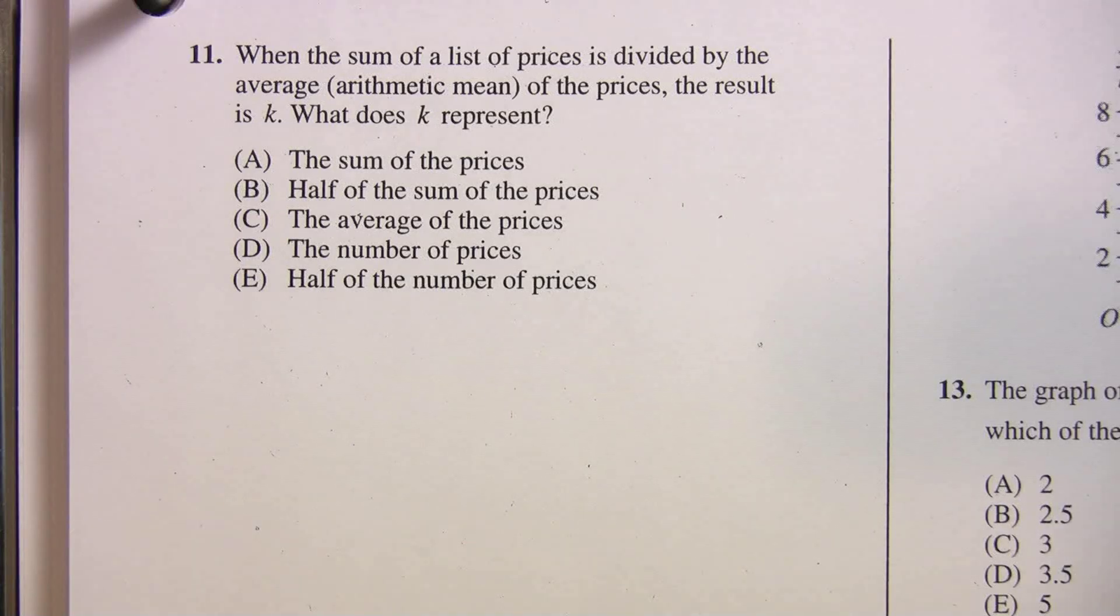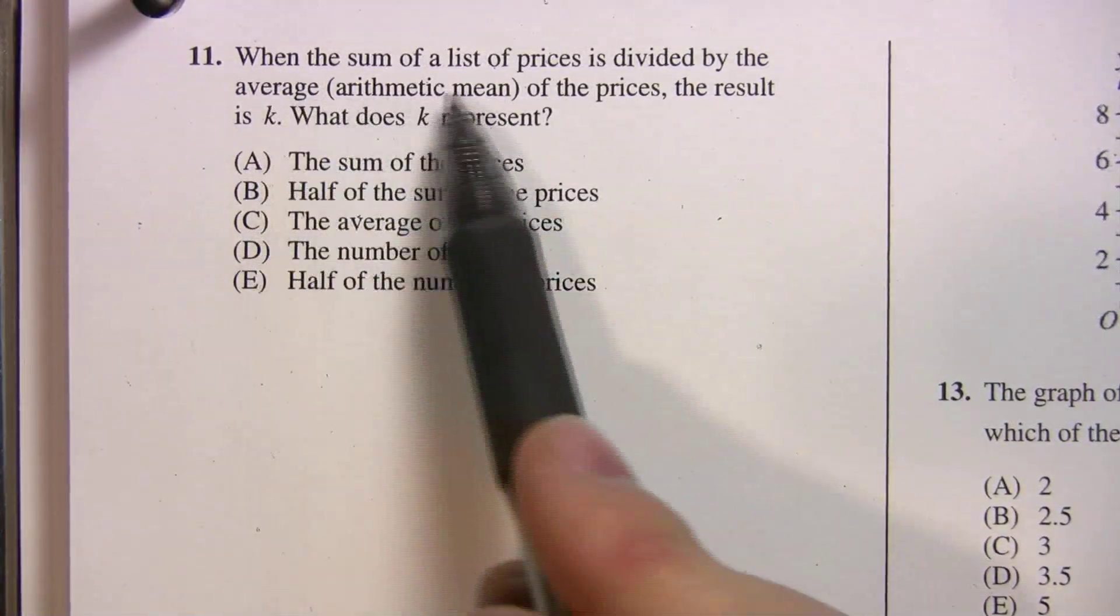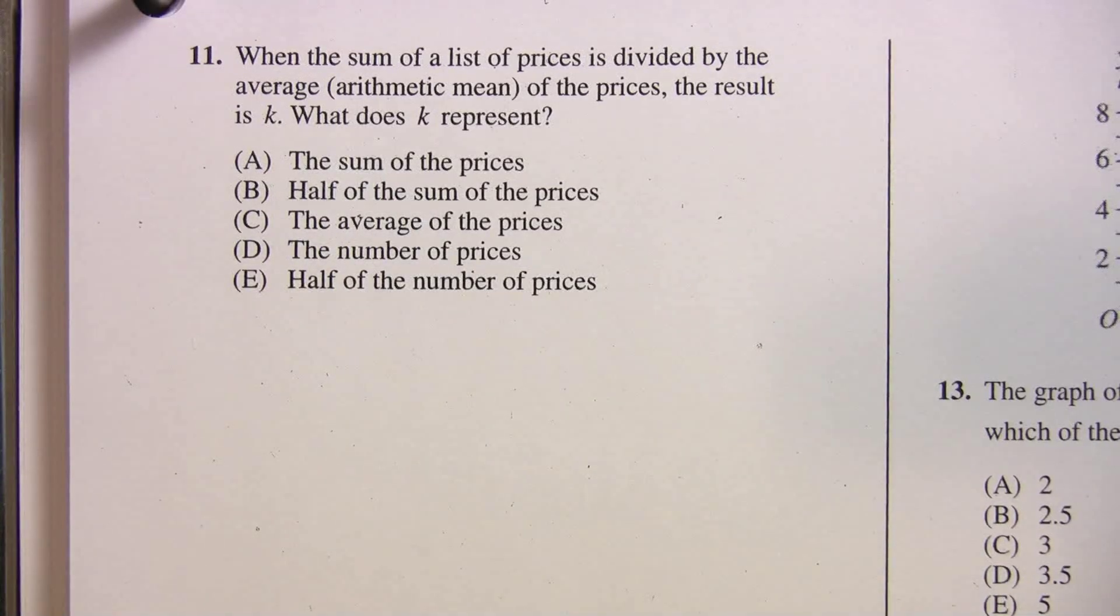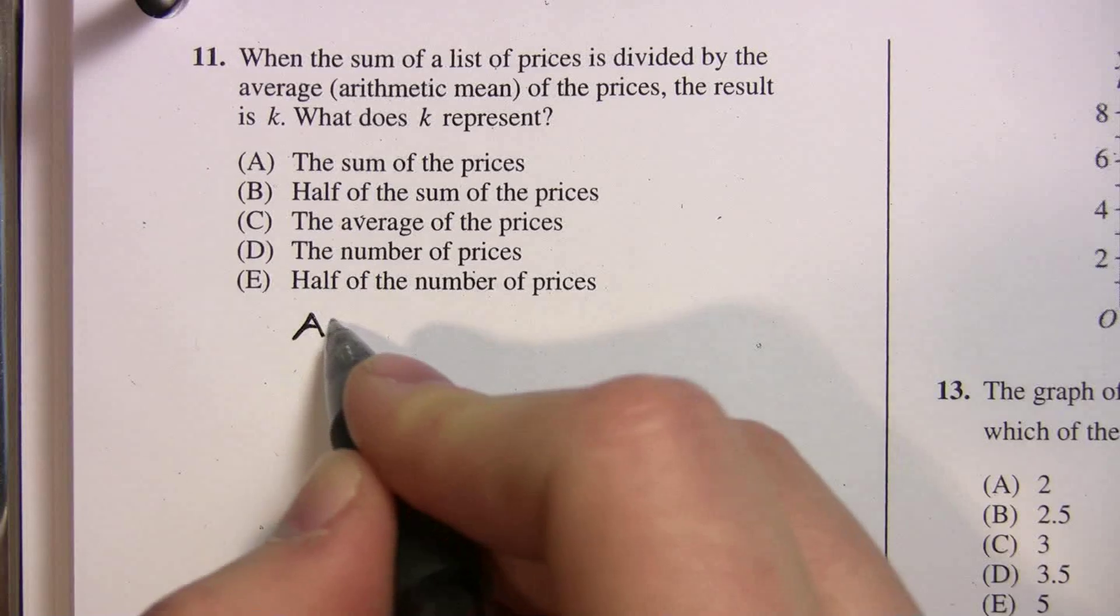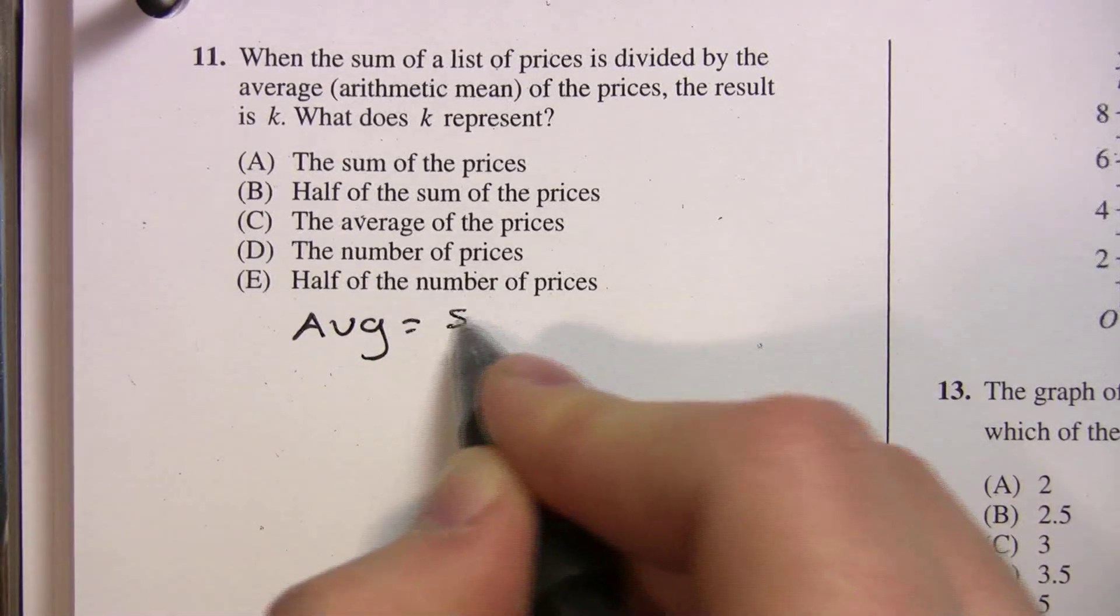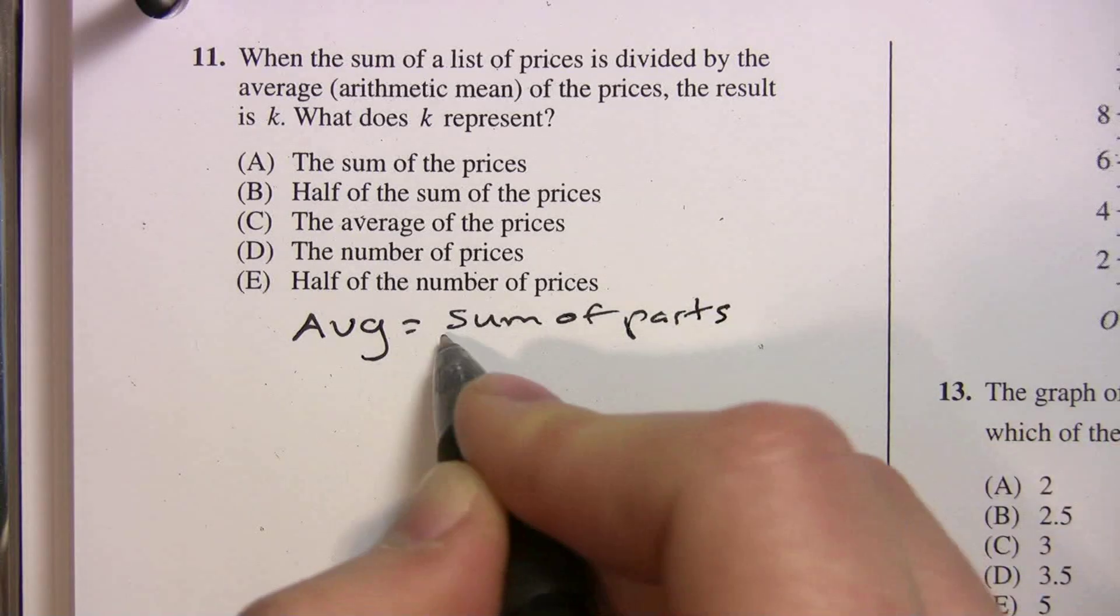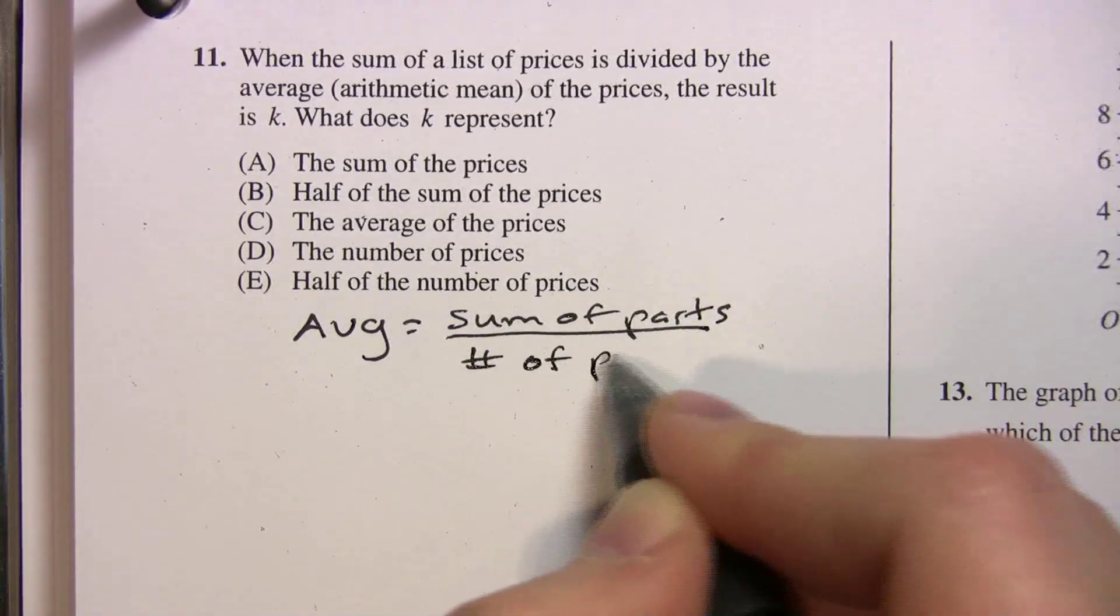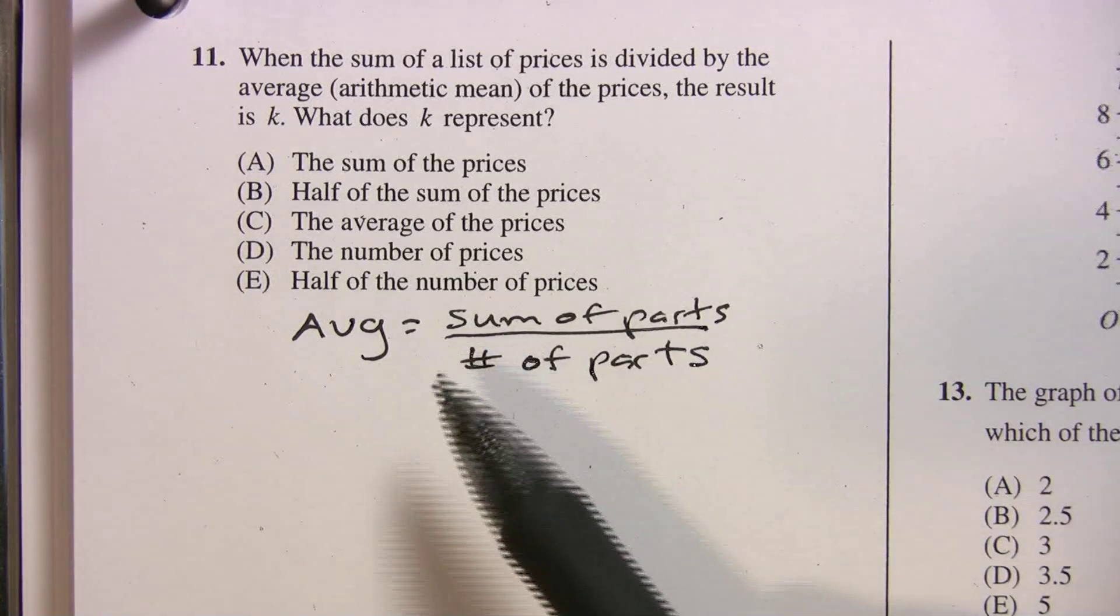When the sum of a list of prices is divided by the average, arithmetic mean, of the prices, the result is k. What does k represent? So real quick, just to let you know, when it says arithmetic mean, that's the same thing as average, so don't worry about that. So we're dealing with an average question, right? Let's write our average formula. So average equals the sum of parts divided by the number of parts. And that's going to help us out.